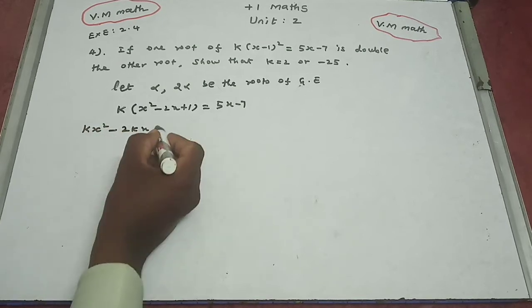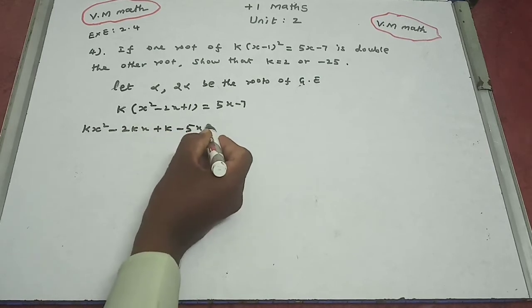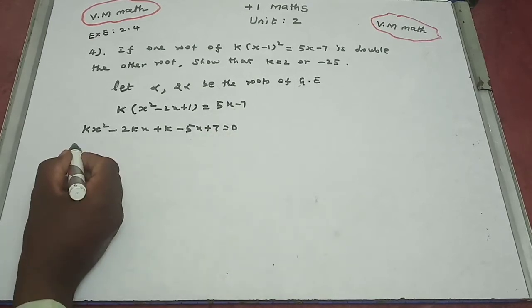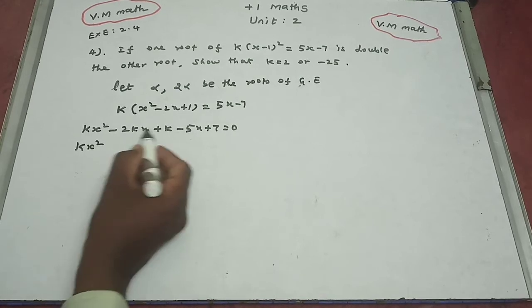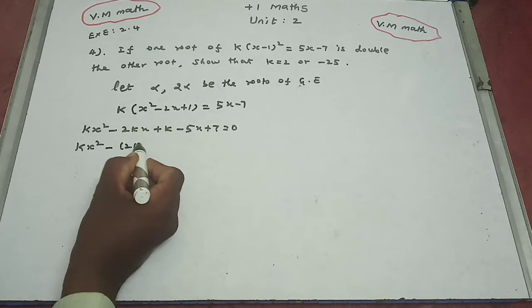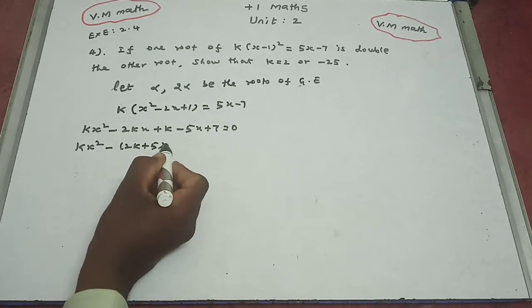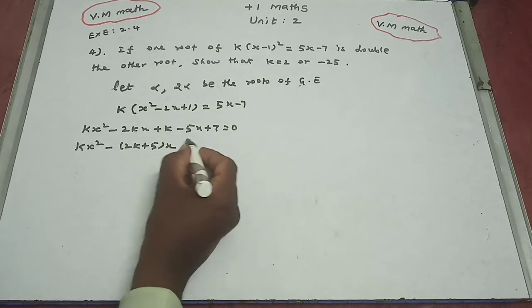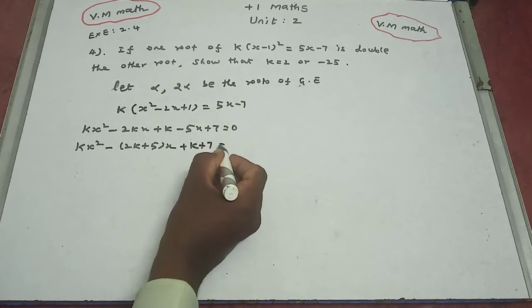Multiplying out: k(x² - 2x + 1) = 5x - 7, so kx² - 2kx + k - 5x + 7 = 0. This gives kx² - (2k + 5)x + (k + 7) = 0.